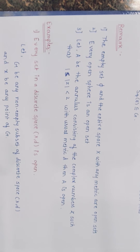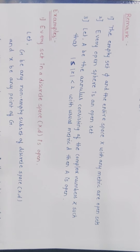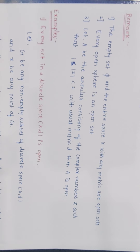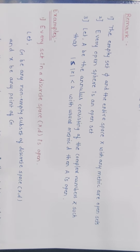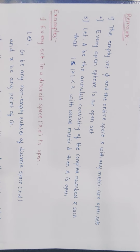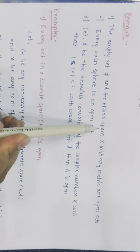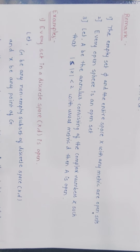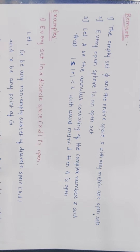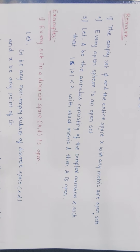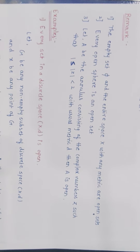Some remarks on open sets. First: the empty set and the entire space X with any metric are open sets. Empty set aur entire set X — woh always open set hote hain. Second: every open sphere is an open set. Last corollary mein dekha tha ki open sphere is the neighborhood of each of its points. Therefore, open sphere is also an open set.